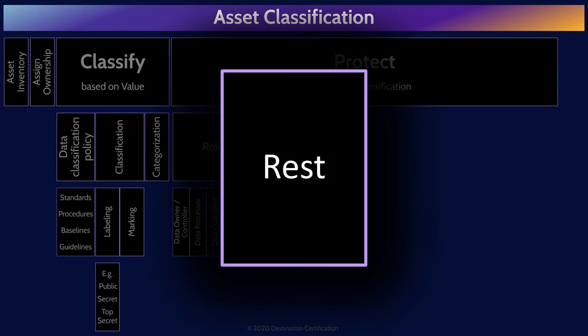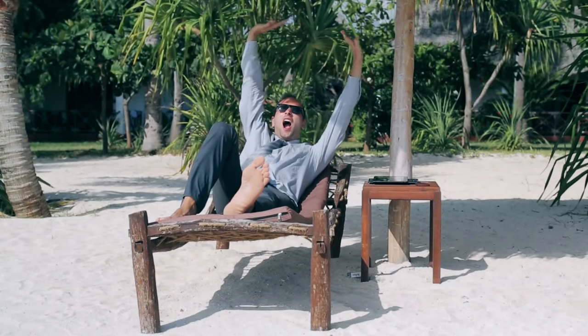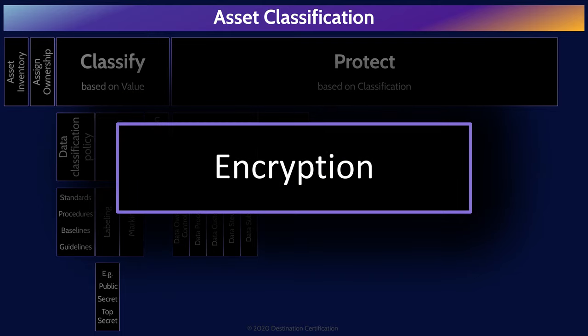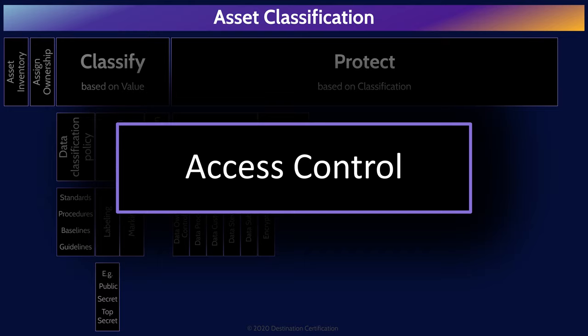We can think about how we protect data based on whether it's at rest, in motion across the network, being used, archived, or defensively destroyed. For data at rest, one major technique is encryption — using an excellent encryption algorithm to encipher the data into ciphertext, which is well protected unless an attacker obtains the correct encryption key or discovers a flaw in the encryption. We can also implement strong access controls, multi-factor authentication, and good logging and monitoring to ensure users are accountable for what they do with the data.